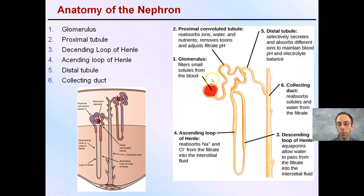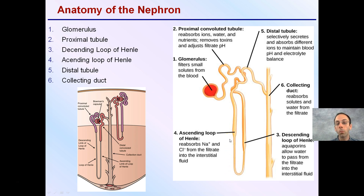Continuing on, as the nephron bends around, we have the descending loop of Henle, where aquaporins allow water to pass from the filtrate into the interstitial fluid. In contrast, the ascending loop makes a 180-degree hairpin turn where sodium ions and chloride ions are reabsorbed from the filtrate into the interstitial fluid. That leads to the distal tubule, which selectively secretes and absorbs different ions to maintain blood pH and electrolyte balance.